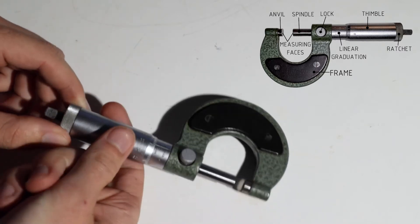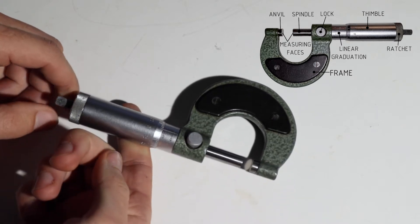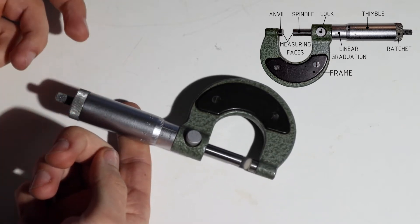At the end of the thimble here is a ratchet which ensures that we always use the same force when measuring a part.